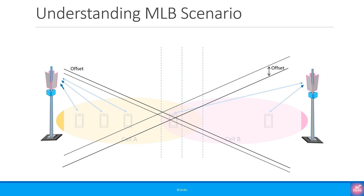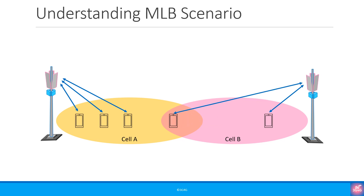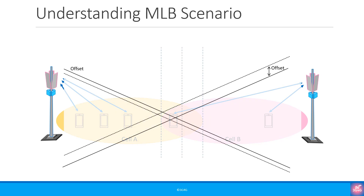The slides will be available on our SlideShare channel. In our case, the UE is now handed over to cell B. Let's say it stays in cell B for a while, and then ends up in the common region again. As cell B is still lightly loaded, we want to ensure that the UE stays in cell B as much as possible before handing it over to cell A. This should happen without the quality of data or calls falling below a certain level. This is what is meant by Mobility Load Balancing.